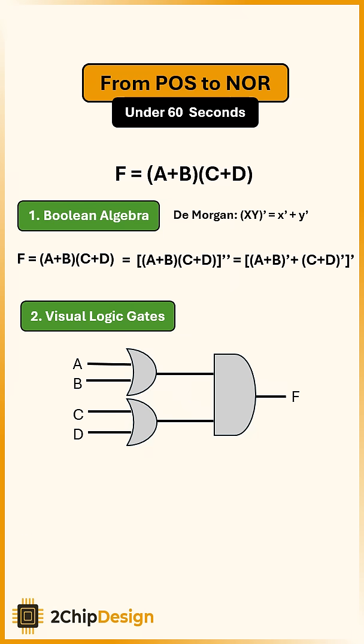To move toward a NOR implementation, we add a NOT to the output of each OR gate, turning them into NOR gates. Then we balance the circuit by adding a NOT to the input of the AND gate.